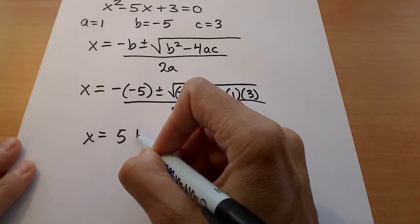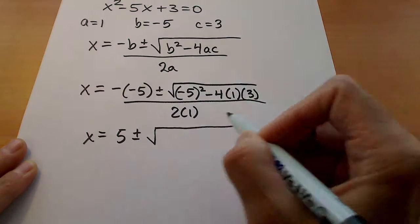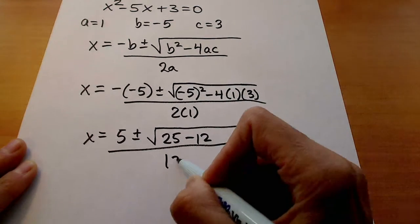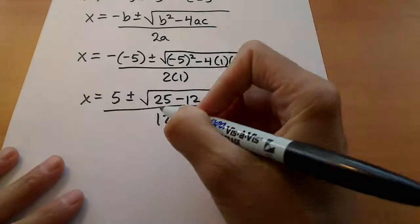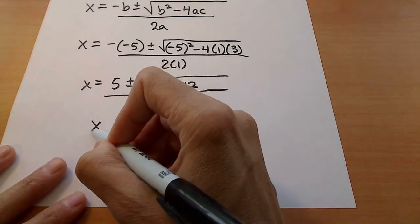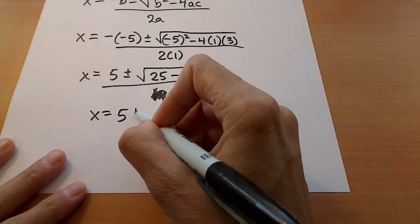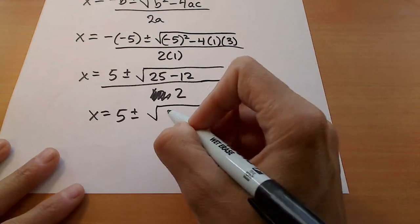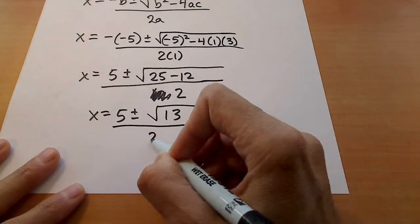So this is 5 plus or minus the square root of 25 minus 12 all over 2. And then just continuing to simplify here, we get 5 plus or minus the square root of 13 all over 2.